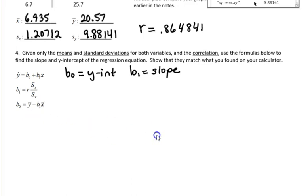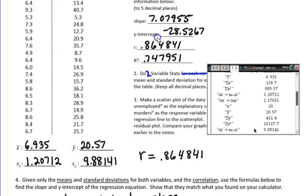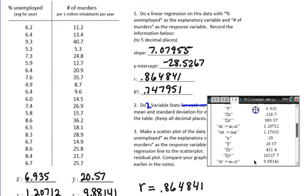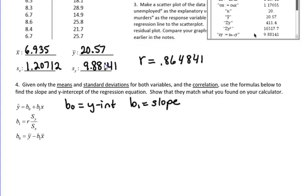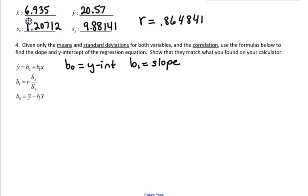So how do we go about using just these five numbers to get the equation of the line? You might think, why do I need to use those formulas? I already know the equation of the line. Well, I had all of the raw data. Sometimes you're not given the raw data. Sometimes you're only given these five numbers, the statistics about the data, and asked to find the equation of the line of best fit.